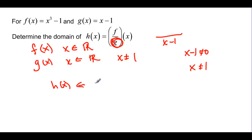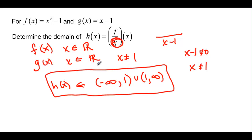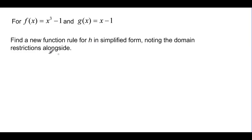So the domain of h of x goes everywhere except x equals 1. We write it as x is an element of negative infinity up to 1, not including it — because that would cause a 0 in the denominator — union 1 to infinity. Consider both domains and also what would make the denominator 0. So h of x is f of x over g of x: x cubed minus 1 divided by x minus 1.